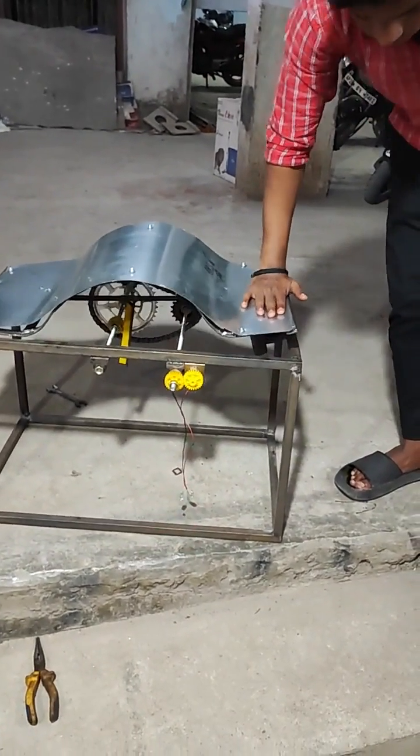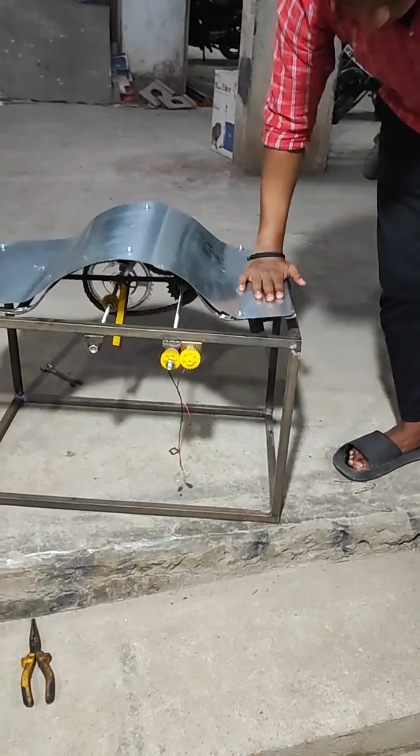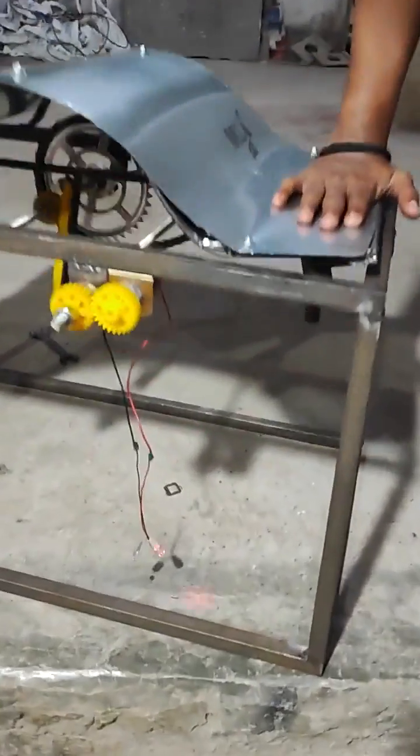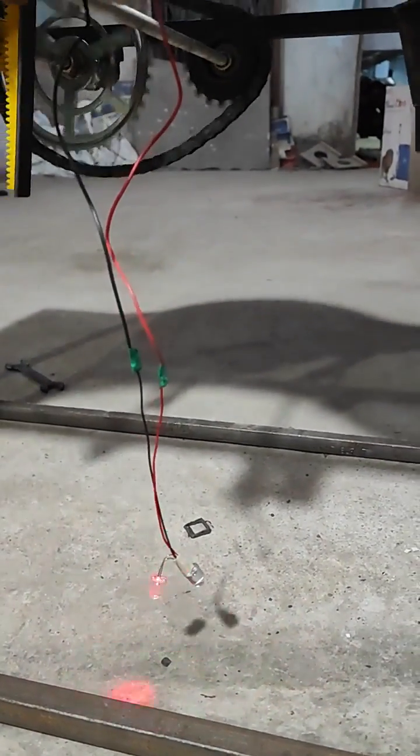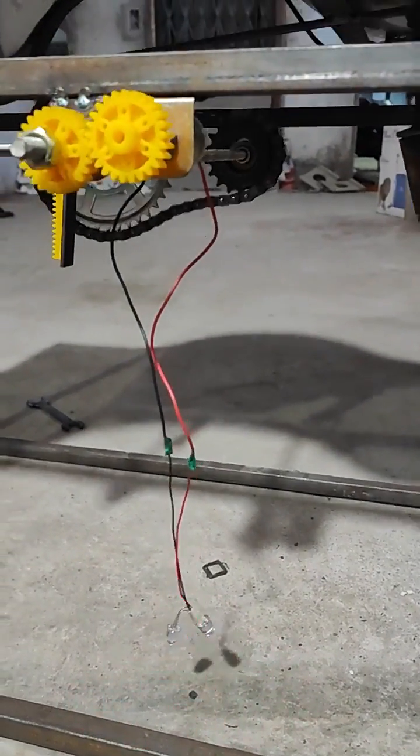Whenever the vehicle moves, the LED is going to indicate the voltage being generated. This generated voltage can be stored into a battery so we can turn on street lights and traffic signal lights also.